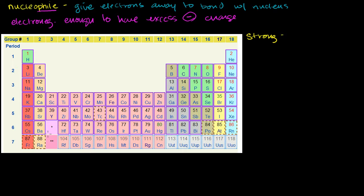A nucleophile has to be electronegative enough to have excess negative charge. If you remember, electronegativity increases from the bottom left of the periodic table to the top right. In organic chemistry, the atoms or ion versions of atoms that are electronegative enough to have excess negative charge are going to be in this area right over here. Most nucleophiles you'll see will either be the negative ion version of some of these atoms, or the part of a molecule that really wants to give away electrons will be one of these atoms.